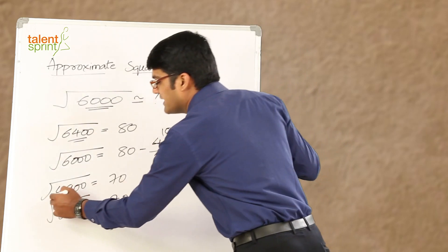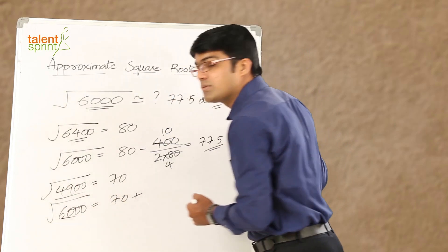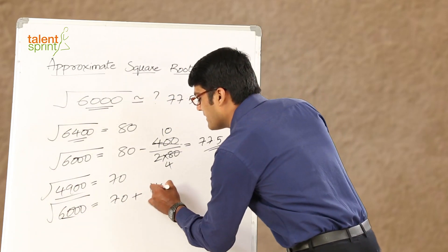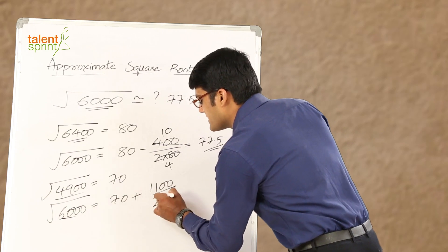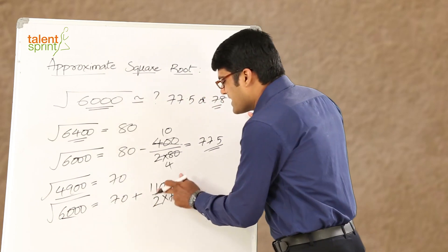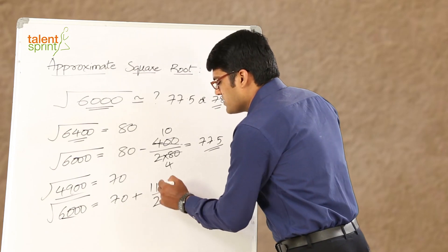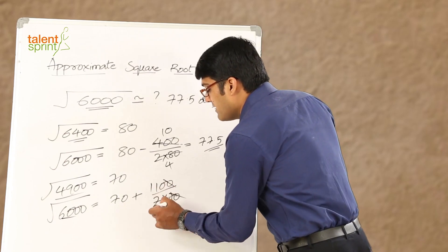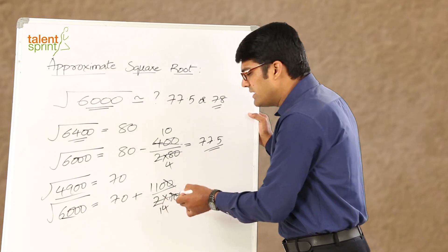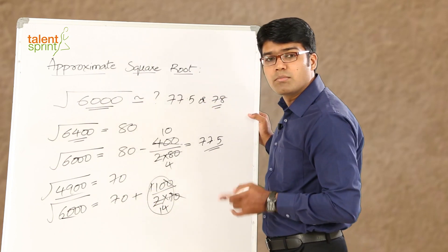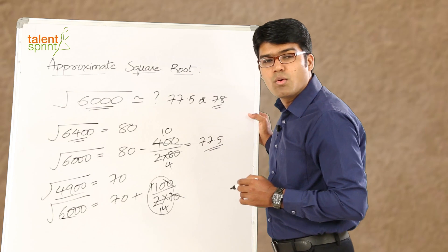Take the difference between the two values. That is 4,900 and 6,000. How much is the difference? 1,100 divided by 2 times 70. So, 1,100 divided by 2 into 70. 2 into 70 is 140. So, 0s anyway get cancelled. We are left with 110 by 14. 110 by 14 can be approximately taken as 8 because 14 into 8 is 112.